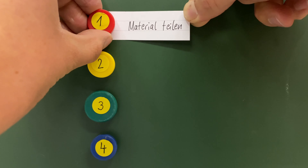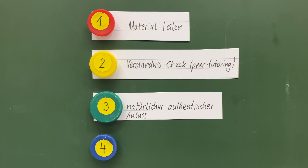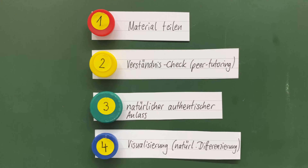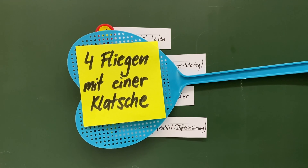Zusammenfassend gibt es vier Gründe für Gruppenarbeit zu diesem Thema: Erstens teilen wir Material. Zweitens ermöglichen wir Peer-Tutoring – Kinder schlüpfen gegenseitig in Lehrer-Schüler-Rollen und überprüfen ihr Verständnis. Drittens haben wir einen natürlichen, authentischen Anlass: die Kinder schlüpfen in die Rolle der Kinder auf den Bildern und nehmen natürlicherweise eine andere Perspektive ein, was bei der Aufgabenstellung hilft. Wenn man Gruppenarbeit geschickt einsetzt, schlägt man viele Fliegen mit einer Klatsche. Wenn nicht, geht das gründlich in die Hose.